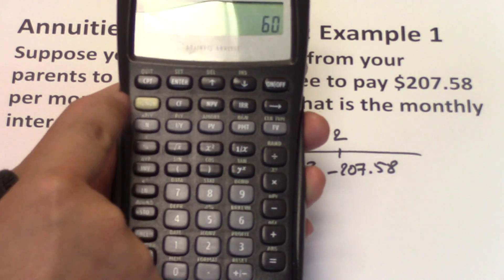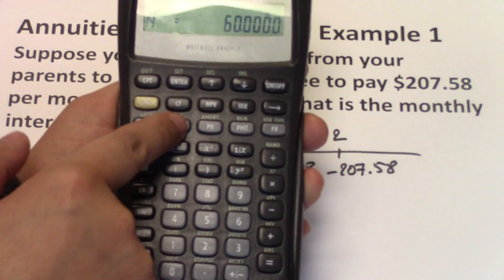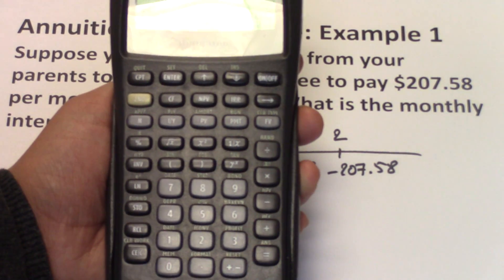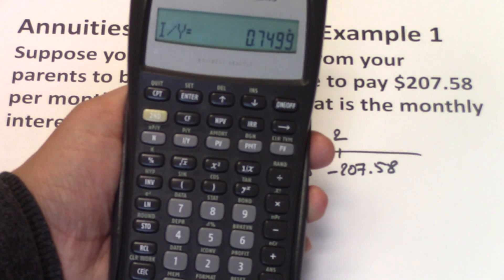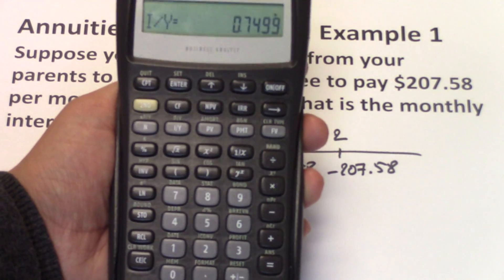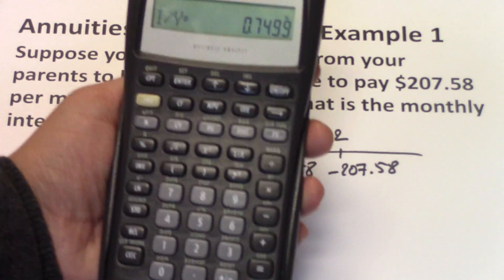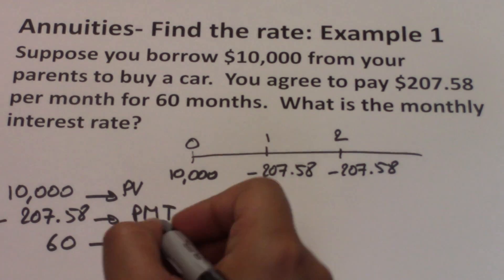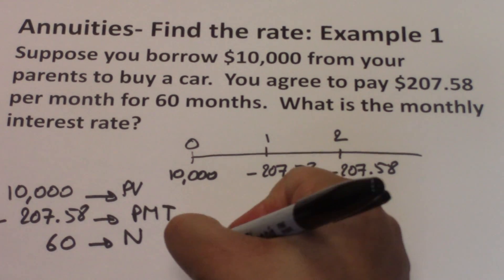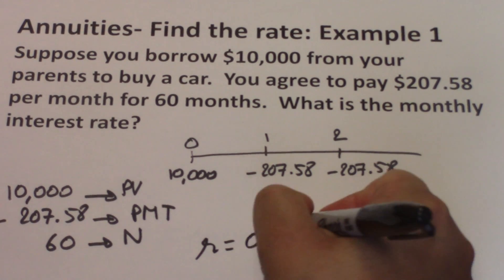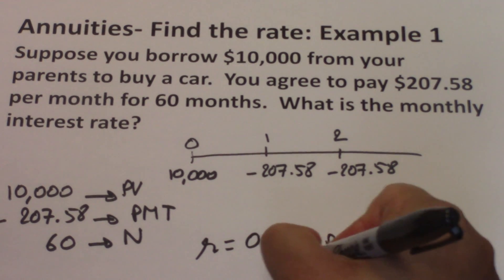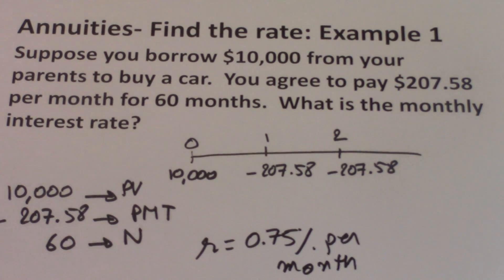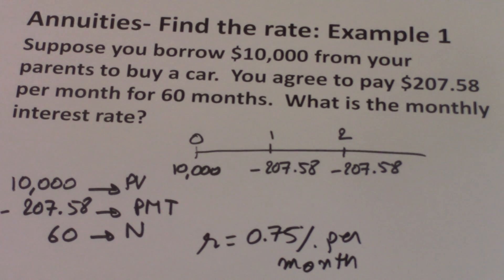60 is the N. Compute I/Y, which gives us 0.7499, or essentially 0.75%. So this loan's interest rate is 0.75% per month — the monthly interest rate here is 0.75%.